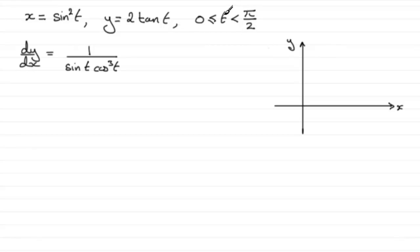For something like this, when T equals 0, you can see that we end up with x equals sine of 0, which is 0, and y equals 2 tan of 0, which is 0. So this graph clearly goes through the origin. I'm just going to draw a curve something like this. This is our curve C.